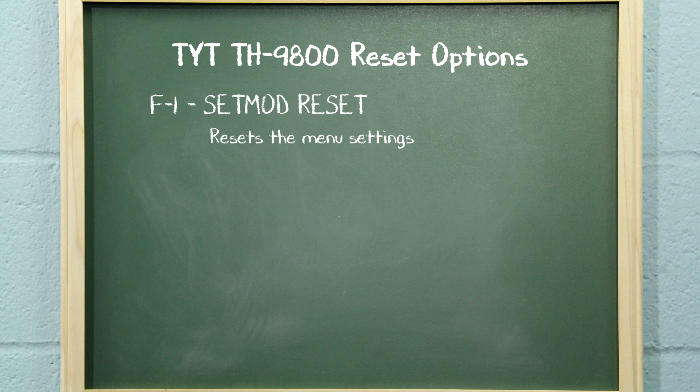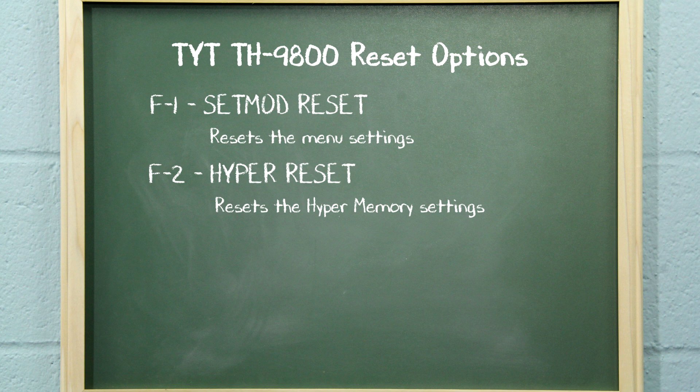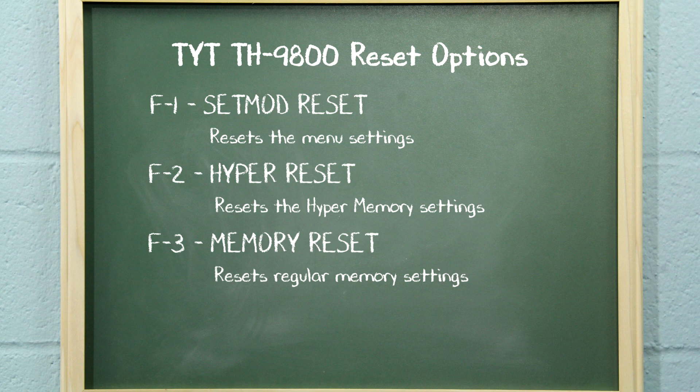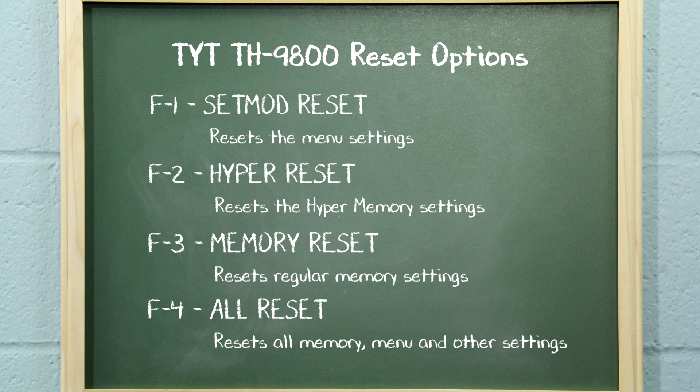F1 is Set Mod Reset — it resets the menu settings to factory defaults. F2 is Hyper Reset — it resets the hyper-memory settings to factory defaults. F3 is Memory Reset — it resets regular memory settings to factory defaults. And F4 is All Reset — it resets all memory, menu, and other settings to factory defaults.